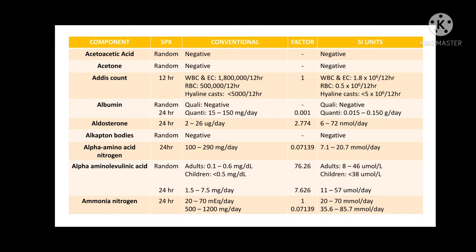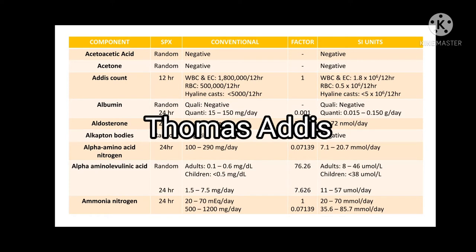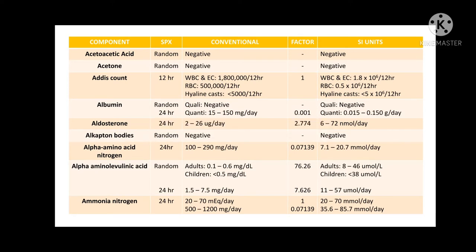In clinical microscopy, the Addis count is a urine test measuring urinary casts over time. It is named after Thomas Addis. The expected normal results under conventional units for WBC and epithelial cells is 1,800,000 per 12-hour sample collection. Red blood cells must be around 500,000 per 12-hour. In hyaline casts, it must be less than 5,000 per 12-hour. The conversion factor used is 1.